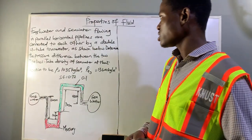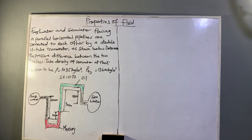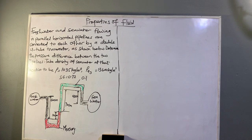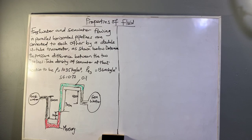Freshwater and seawater flowing in parallel horizontal pipelines are connected to each other by a double U-tube manometer, as shown below. We are to determine the pressure difference between the two pipelines. Take the density of seawater at the location to be 1035 kilogram per meter cube, mercury to be 13,600 kilogram per meter cube, and the specific gravity (SG) of oil to be 0.72.